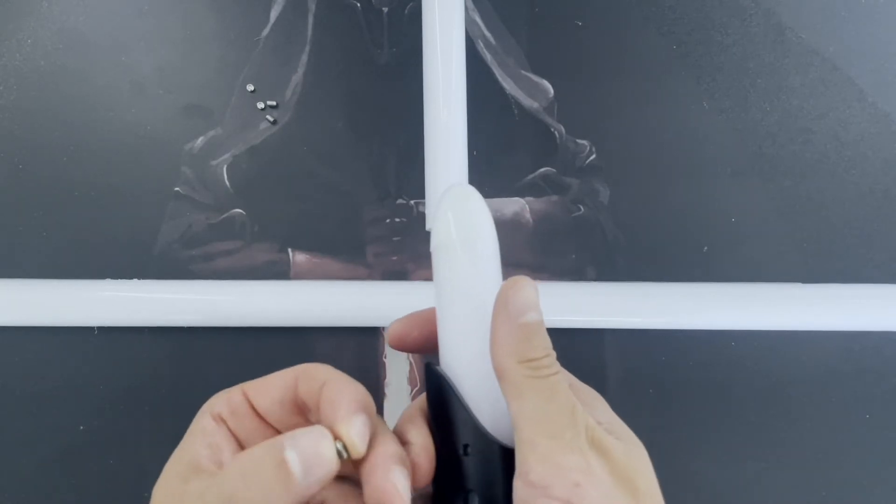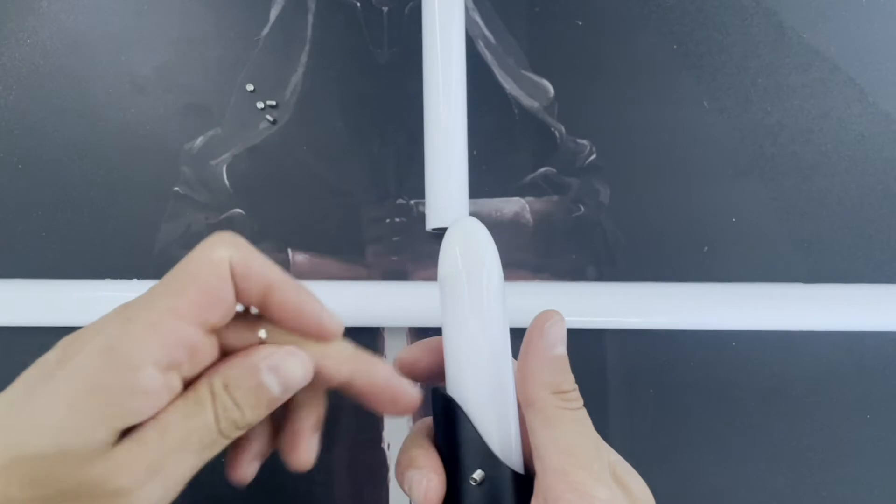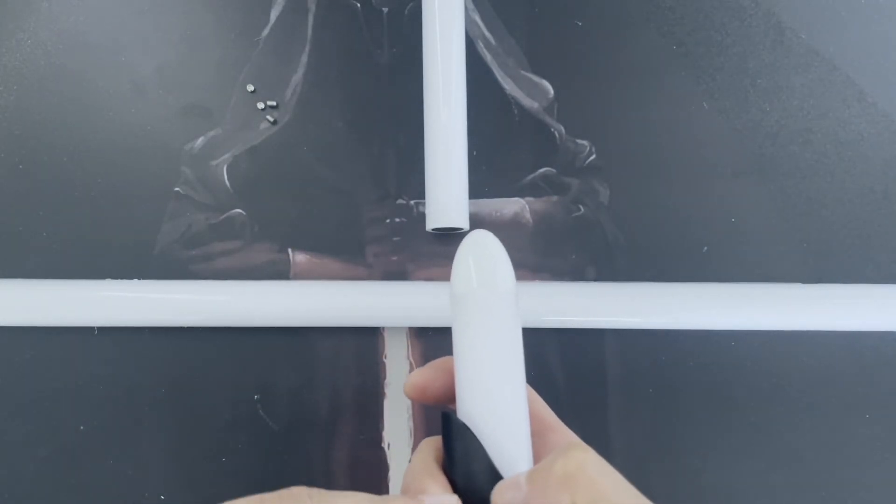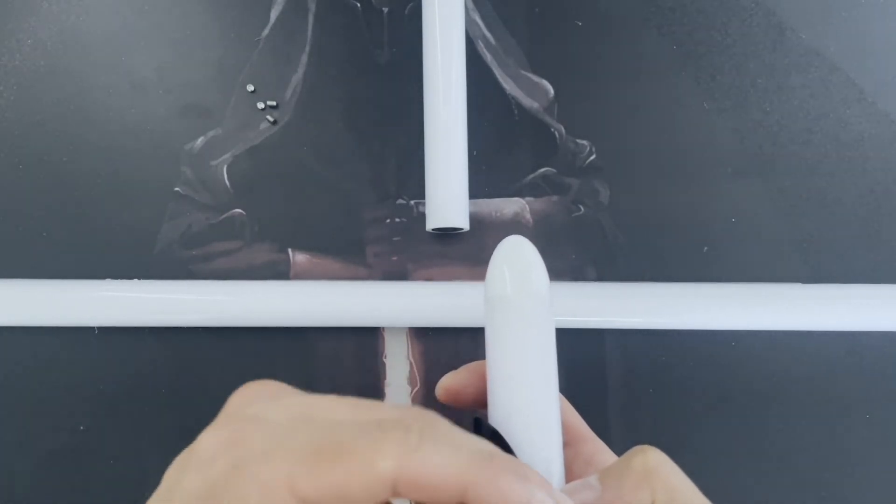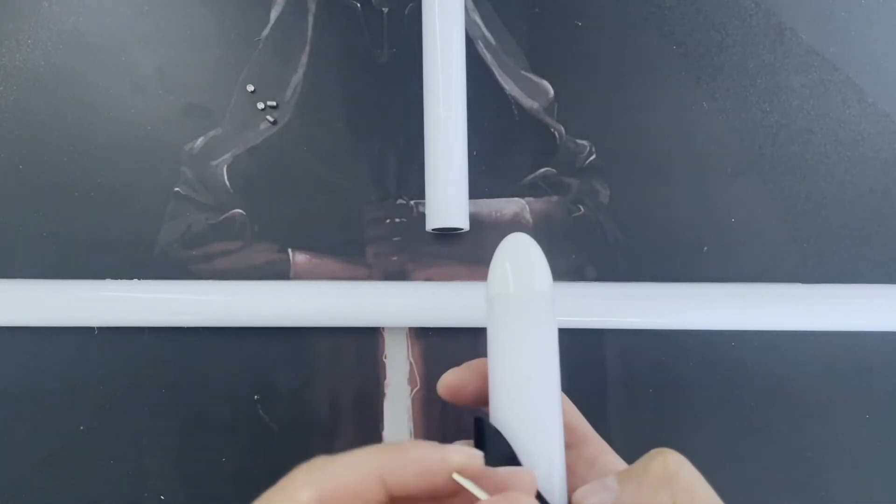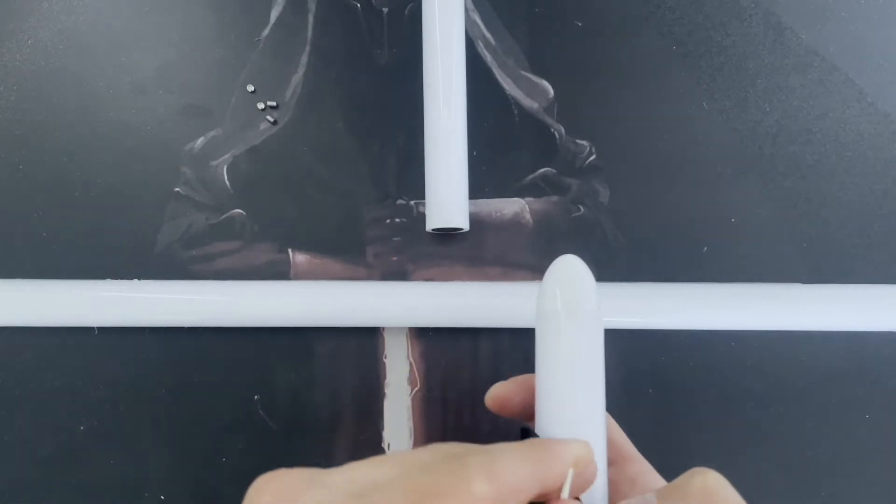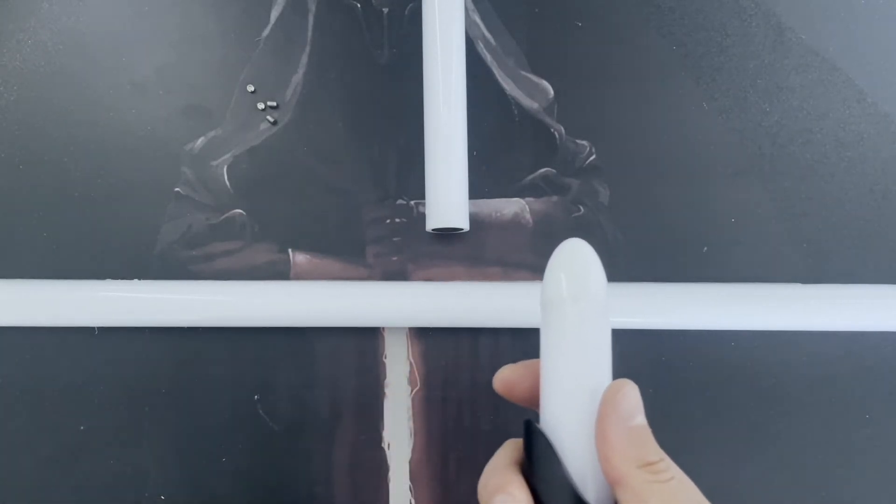These can be a little bit fiddly, so just take your time with these. Try not to put them in wonky because what will happen is you'll cross thread them. If you keep taking them out and then put them back in when you've cross threaded it, you'll just wear down the screw or wear down the thread, and then you'll find it will stop going tight after a while.